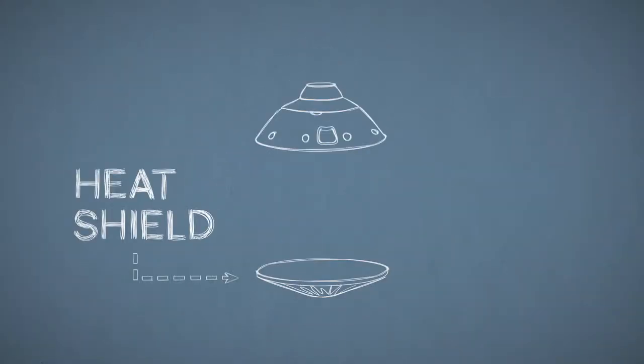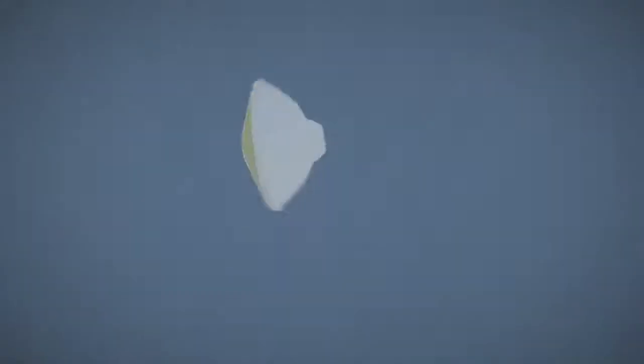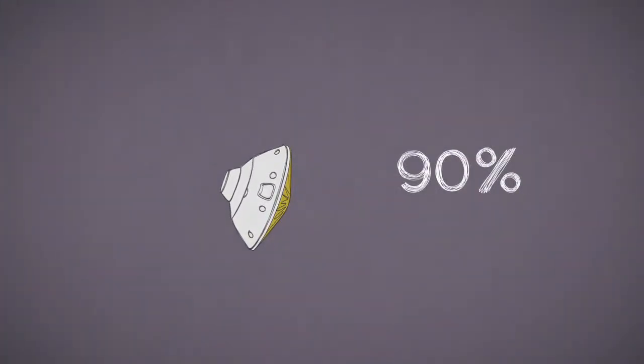First, your capsule needs a heat shield. It protects the spacecraft inside from the heat and friction of entry into the atmosphere. Friction slows you down over 90%, but not enough to land safely.